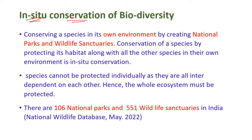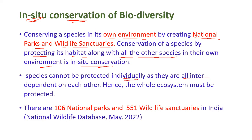In-situ conservation of biodiversity means conserving a species in its own environment by creating national parks and wildlife sanctuaries. It is the conservation of a species by protecting its habitat along with all other species in their own environment. Since species are interdependent and interrelated, the whole ecosystem must be protected. There are 106 national parks and 551 wildlife sanctuaries in India, according to the National Wildlife Database, May 2022.